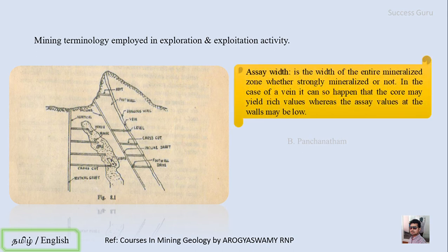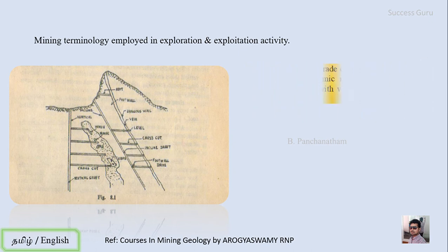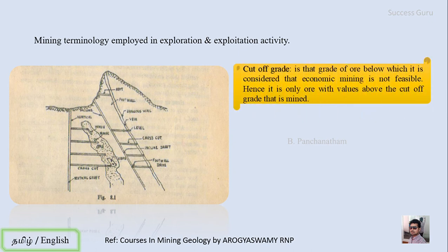There is also the term assay width — the width of the entire mineralized zone, whether strongly mineralized or not. In the case of a vein it can happen that the core may yield very high assay values while the walls may be very low; the complete calculation gives the assay width. Then there is cut-off grade — the grade of ore below which economic mining is not considered feasible. Only ore with value above the cut-off grade is mined; it represents the minimum grade of deposit that can yield a profit.